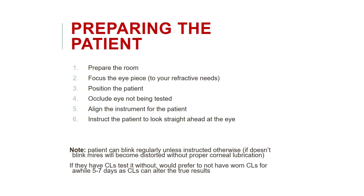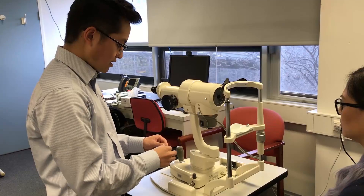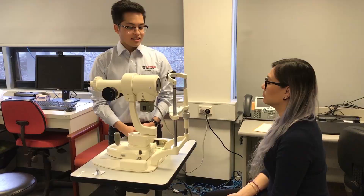Align the instrument for the patient — you can do this by looking from the side. You will see a tiny bright ring in the centre of the cornea. With the correct position established, the patient will see a reflection of their eye in the tube of the instrument. Instruct the patient to fixate on the reflection. When setting up the patient, remember to clean the equipment in front of them as it helps to reassure their care.